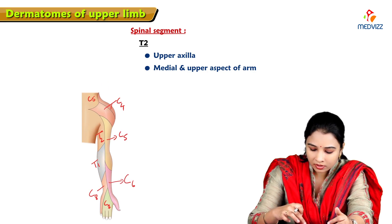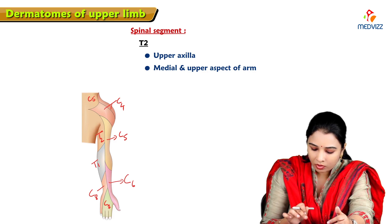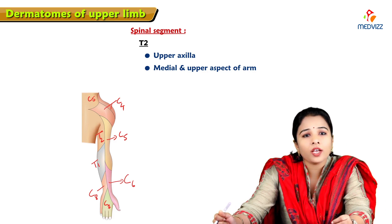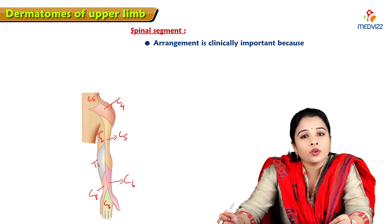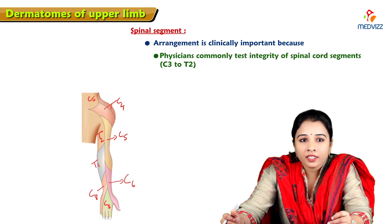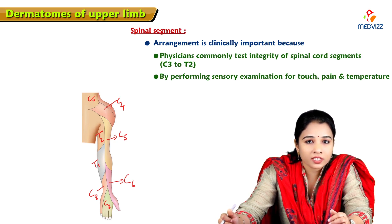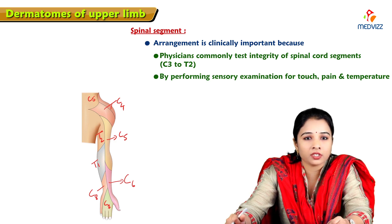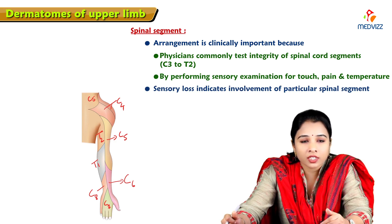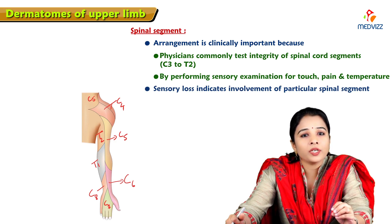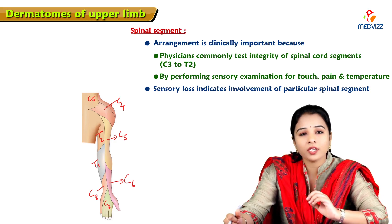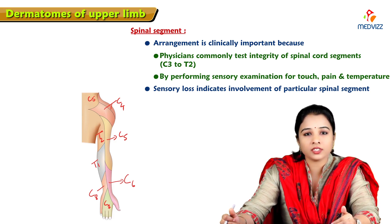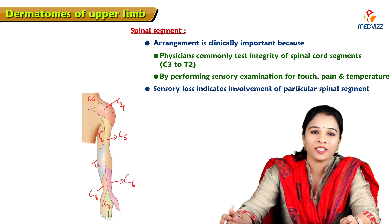It is easy to remember: C4, C5, C6, C7, C8, then going medially T1 and T2. The understanding of dermatomal arrangement is clinically important because physicians commonly test the integrity of spinal cord segments from C3 to T2 by performing sensory examinations for touch, pain, and temperature. Sensory loss in a skin area indicates involvement of a particular spinal segment. This is the clinical importance of dermatomes. I hope this topic on the dermatomal pattern of the upper limb has been made easier to understand. Thank you.